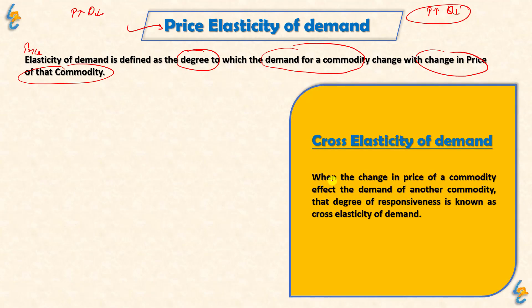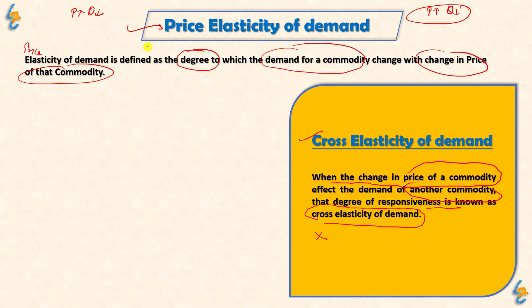Cross Elasticity of Demand: when the change in price of one commodity affects the demand of another commodity, that degree of responsiveness is known as Cross Elasticity of Demand. But we will not cover this in this video — it is just a special case of Price Elasticity of Demand, which we will talk about in another video. In this video, we will talk about just Price Elasticity of Demand.